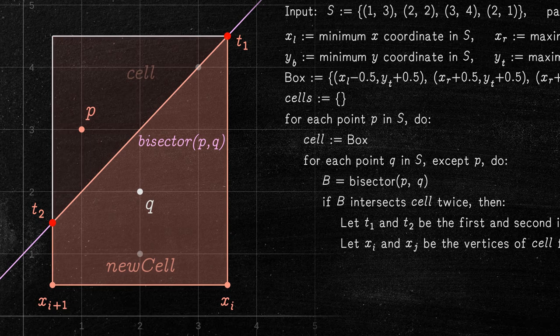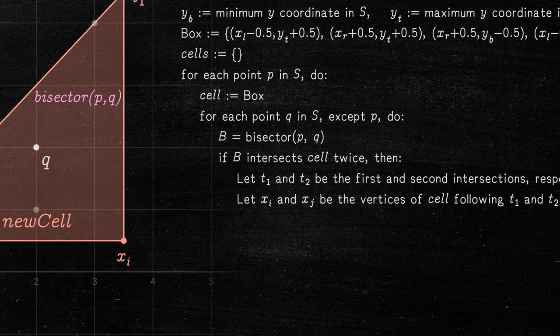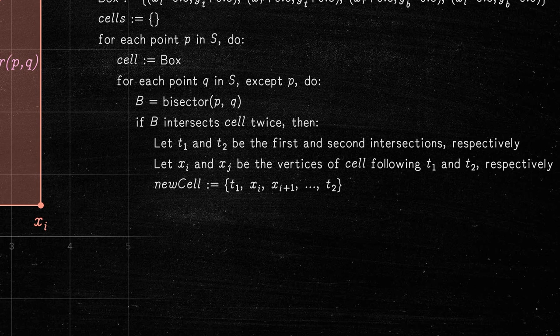The new cell contains the first and second intersections as well as the vertices contained between them. As we can see, the new cell goes from the first intersection to the second intersection, passing through all vertices between them.